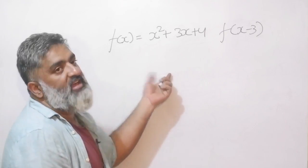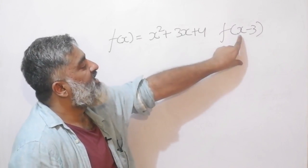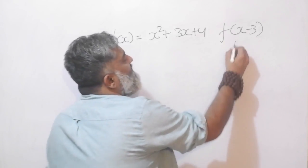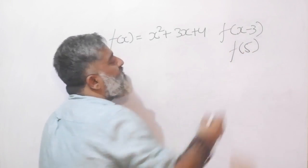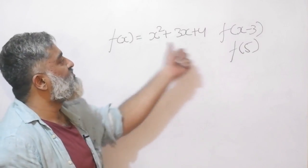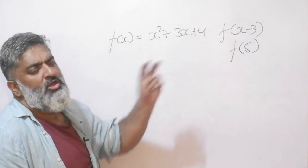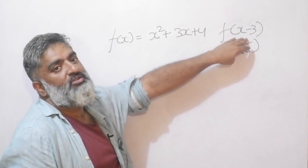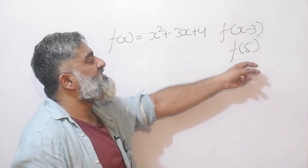Another example with a little twist in the story. This time it looks different. I have f of x minus 3. If I said find me f of 5, that would be very easy. Wherever there is x, put 5 there. This would become 5 square, 3 into 5 plus 4. What is the challenge here? It just looks different. I have to follow the same process.